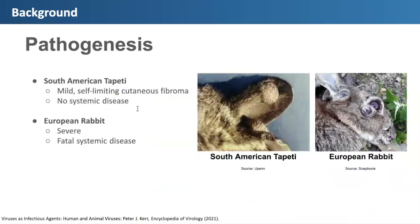Pathogenesis for myxoma virus differs depending on the species. In the reservoir host, the South American tapete, myxoma virus results in the creation of a benign mucous tumor. This is because a flea or mosquito bites it and transfers the virus into it, but the virus is quickly apprehended by the immune response. It's considered a mild self-limiting disease because it can resolve itself naturally without any form of outside treatment. You can see this benign tumor on the back of the ear in the image.